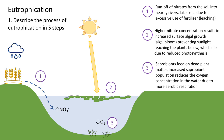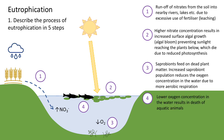So more saprotrophic bacteria carrying out aerobic respiration reduce the oxygen concentration in the water, and then that results in step four. And the text for that.